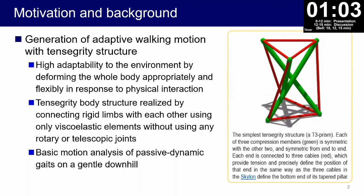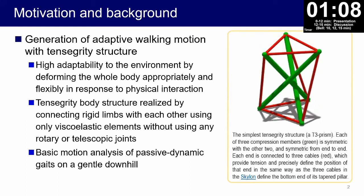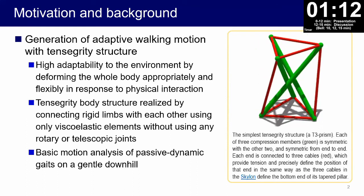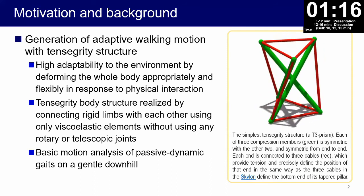A tensegrity body structure is realized by connecting rigid limbs with each other using only viscoelastic elements without using any rotary or telescopic joints. By adopting this structure, the robot can flexibly adapt to the environment.